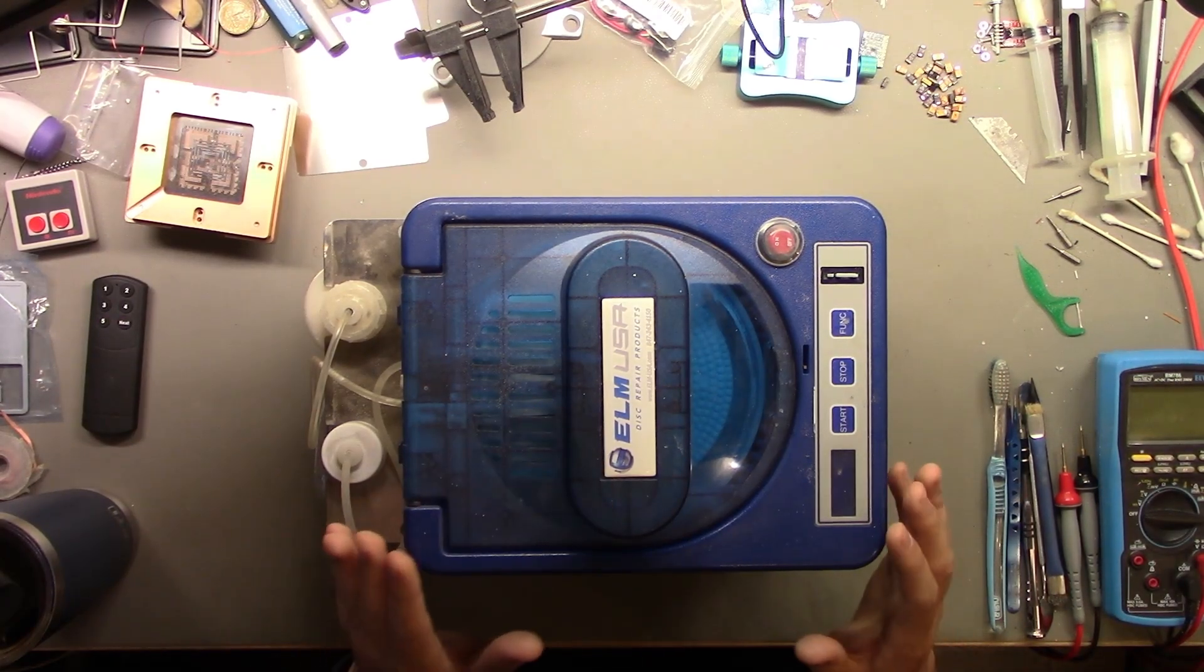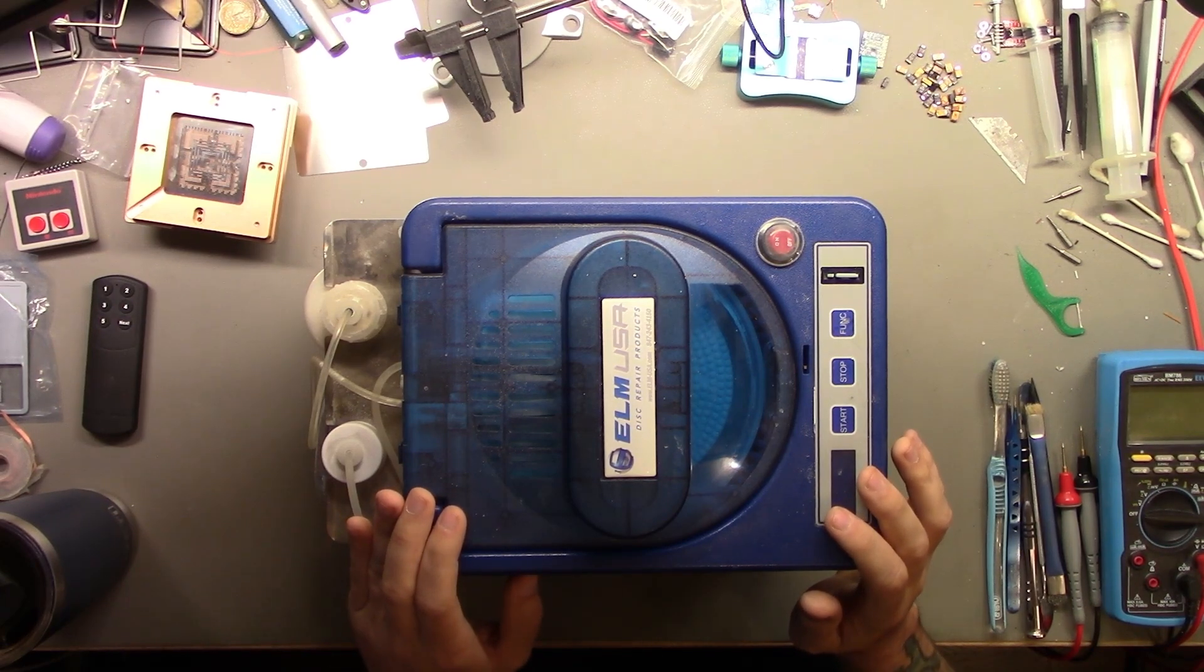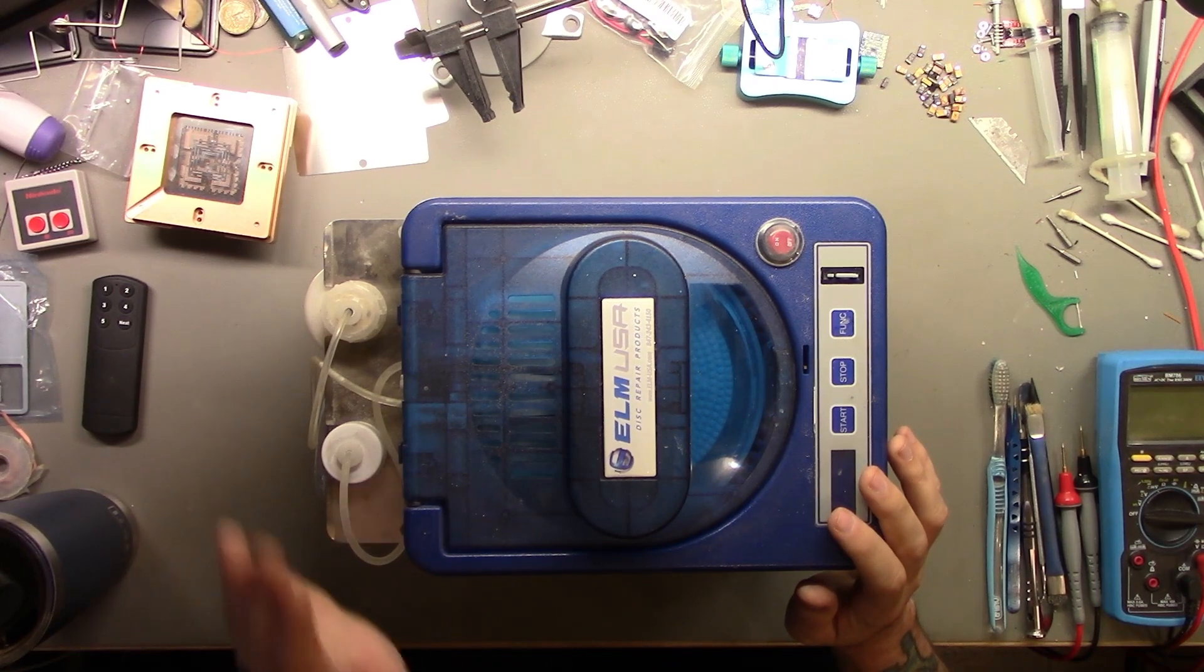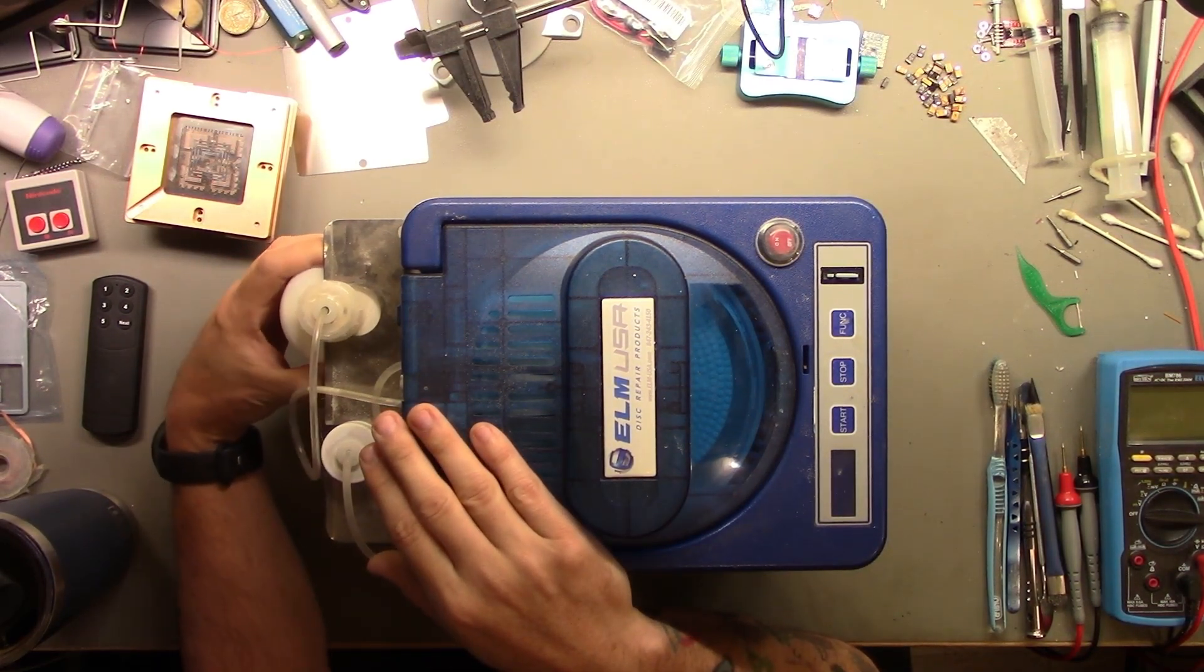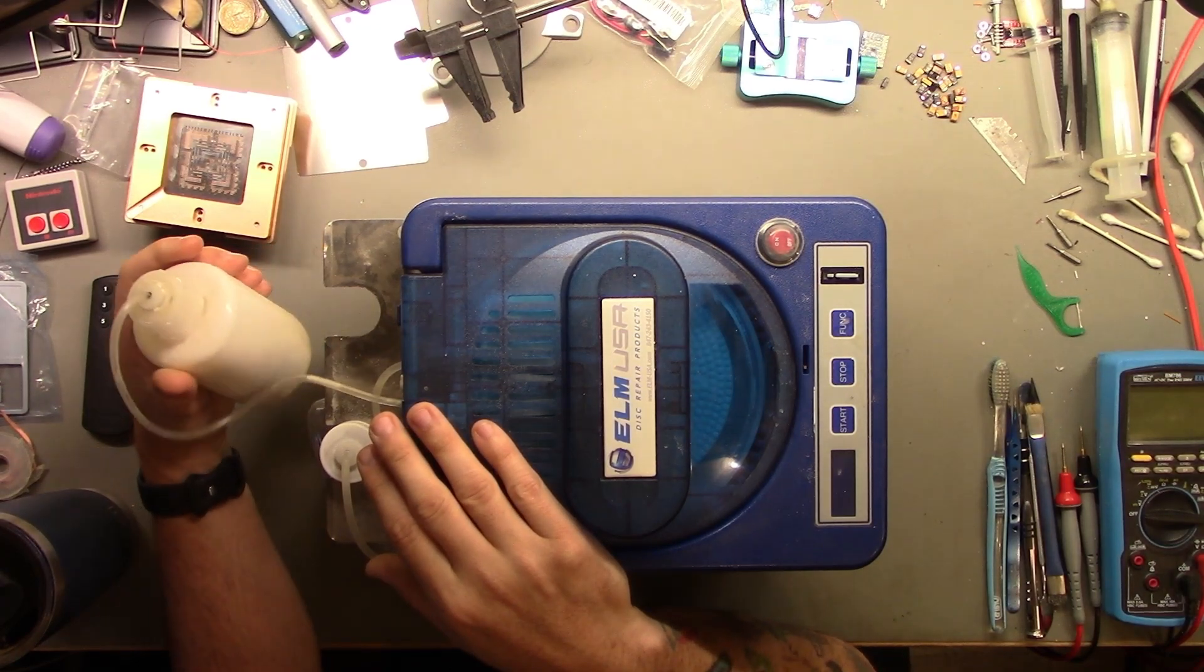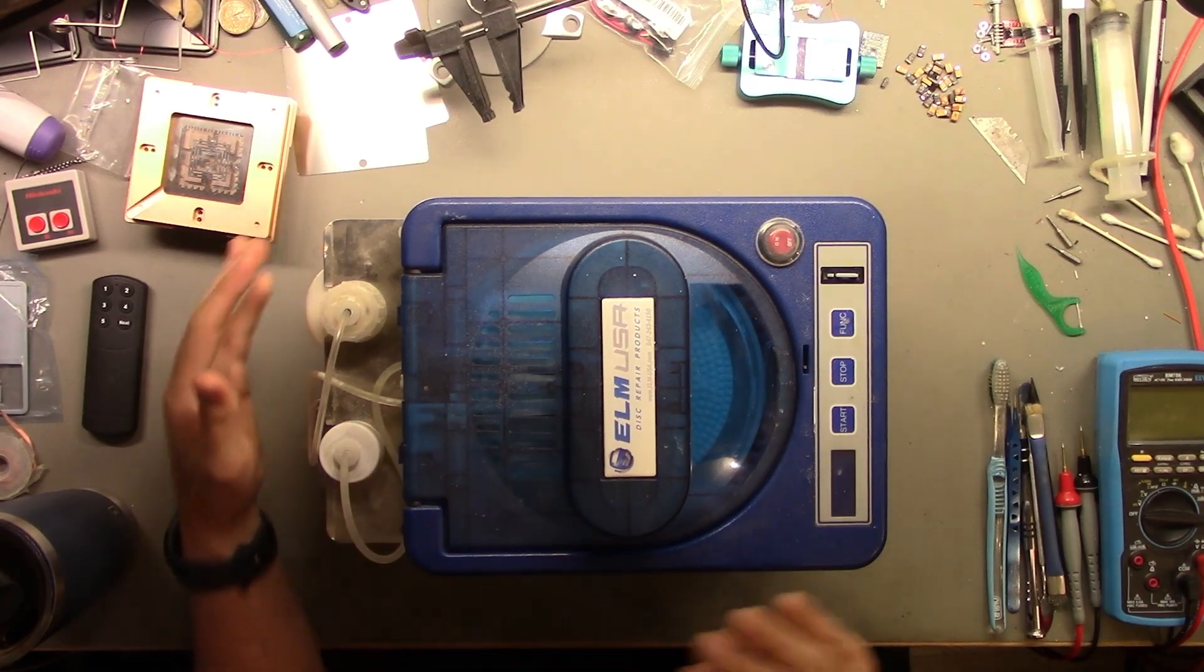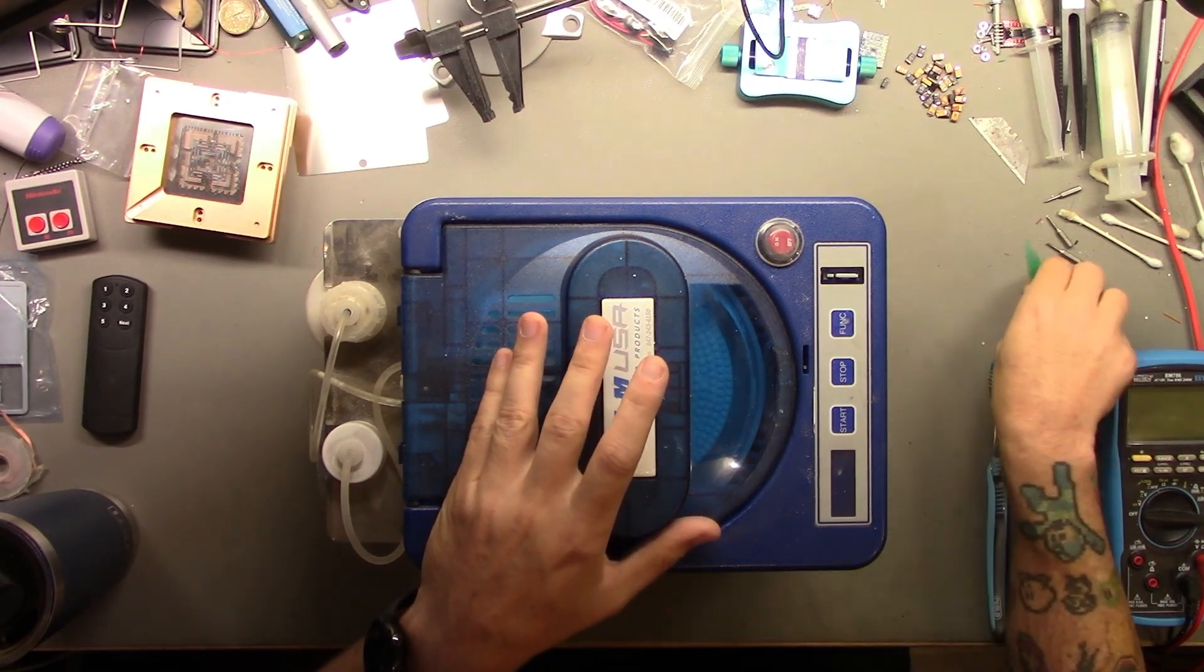All right, so this is the ELM Eco Pro 2 DVD and Blu-ray disc resurfacer. Right now the compound that's used for polishing is clogged in the tubes. So I did the typical running the pump in reverse and forward and all the other troubleshooting steps and it did not help, so I'm going to take it apart and see if I can't fix the problem.